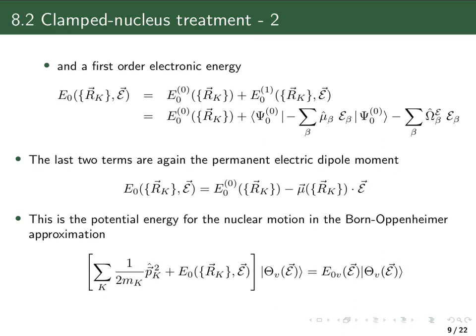After solving the electronic problem in the Born-Oppenheimer approximation, one then solves the nuclear problem. The nuclear Schrödinger equation contains the nuclear kinetic energy operator and a potential energy operator. The potential energy for nuclear motion is the electronic energy, so in the perturbed case it is the unperturbed electronic energy plus the first-order correction. As a solution we obtain perturbed vibrational wave functions and perturbed vibrational energies.